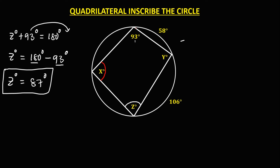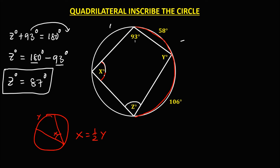To solve for angle X, using the given arc and the theorem that if the vertex is on the circumference of the circle, angle X equals one half of arc Y. So to solve for angle X, that's one half of this arc — the total length of this arc — which is 58 degrees plus 106 degrees.